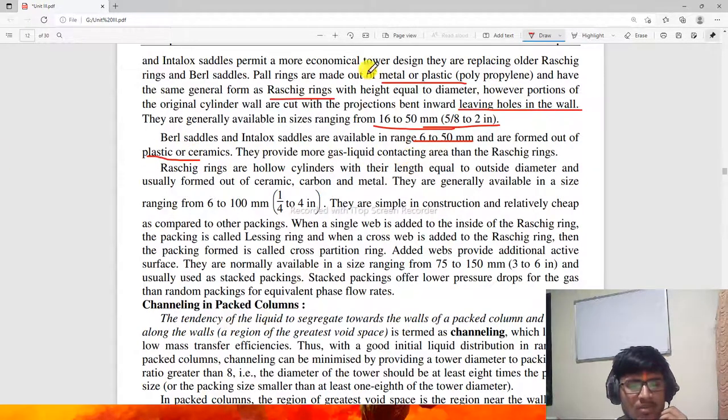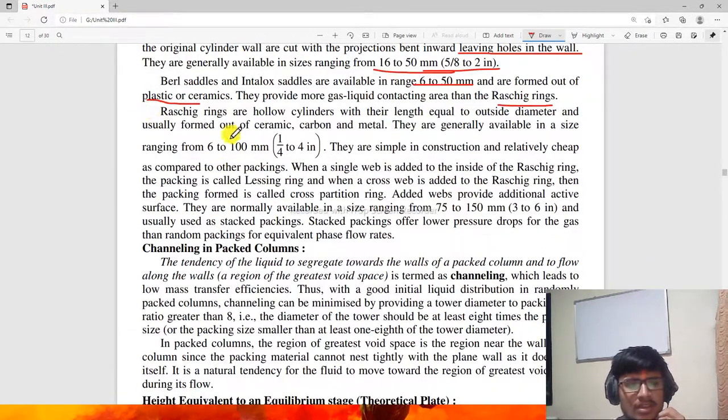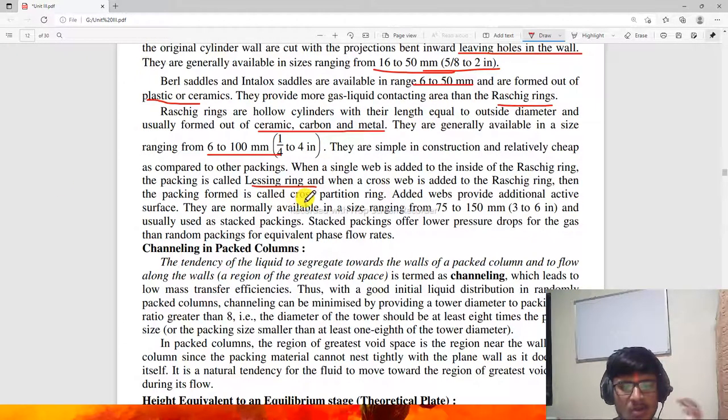Raschig rings are hollow cylinders with their length equal to their outside diameter, usually formed of ceramic, carbon, and metal. They are generally available in sizes of 6 to 200 mm and 1/4 to 4 inches. When a single web is added inside the Raschig ring, the packing is called lessing ring. When a cross web is added, it's called cross partition ring. They are normally available in sizes ranging from 75 to 150 mm and 3 to 6 inches. Stacked packings offer lower pressure drop than random packings at equivalent phase flow rates.